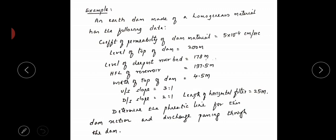The coefficient of permeability of the dam is 5 × 10^-4 centimeter per second. Level of top of the dam is 200 meters, level of deepest riverbed (lower RL) is 178, and the RL of full high flood level of reservoir is 197.5. Using this you can calculate the height at points A and B.